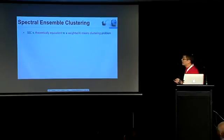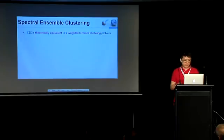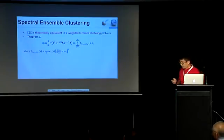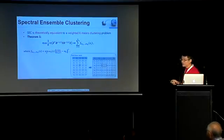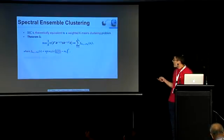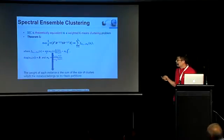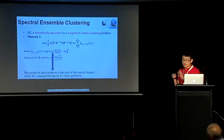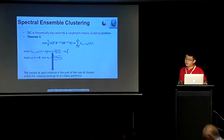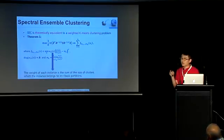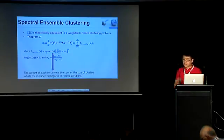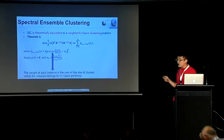We prove that SEC is theoretically equal to a weighted k-means problem. As shown in theorem one. Here, the vector b of x is a binary vector viewed according to the basic partitions. And omega b of x is the weight. And k is the centroid. Note that the weight of an instance is the sum of the size of clusters which it belongs to in the basic partitions. For example, if the instance x is an outlier or noisy data, the size of the cluster it belongs to should be small. And then the weight, omega b of x, should be small.